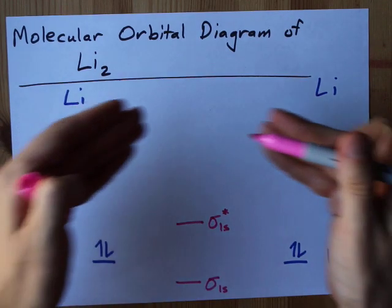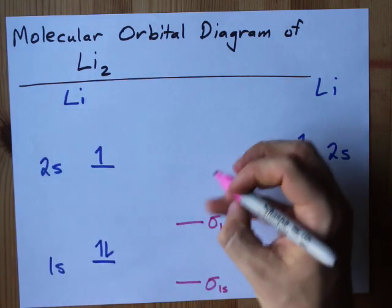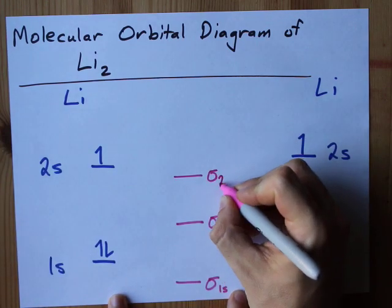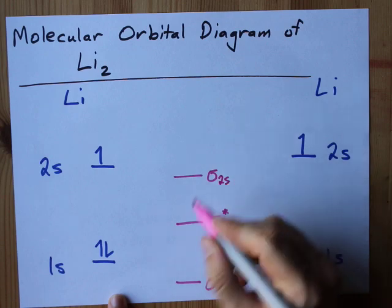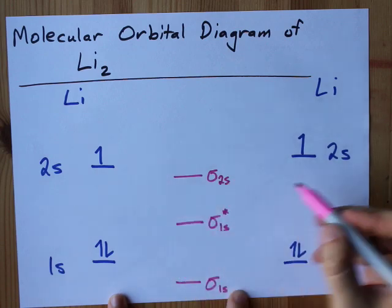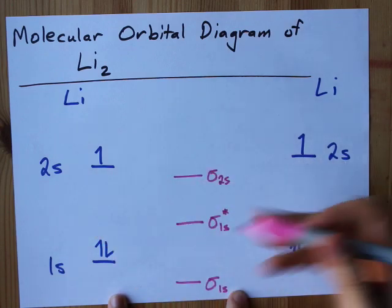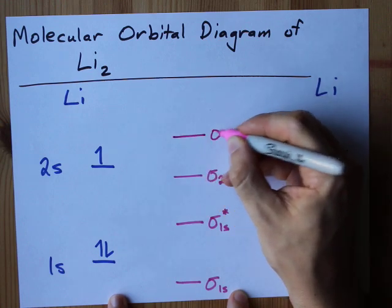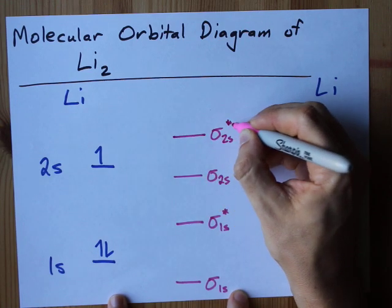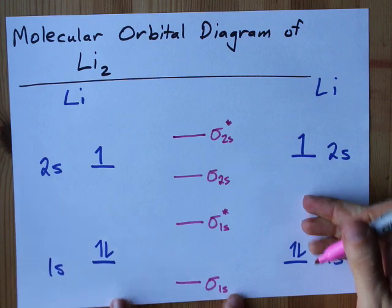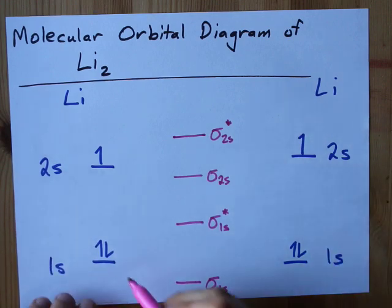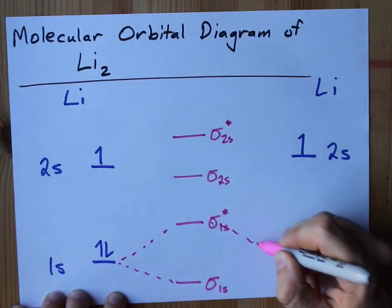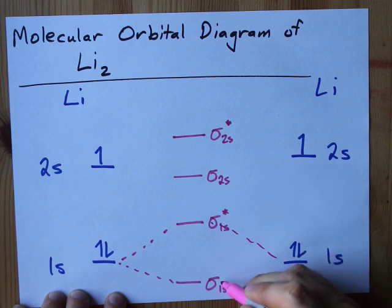When the two 2s's overlap, you get a similar thing: a sigma 2s bonding orbital at a slightly lower energy than each of the corresponding 2s's, and a sigma 2s anti-bonding orbital at a slightly higher energy. I like putting dotted lines in here to show that it's the 1s's that are contributing to each.